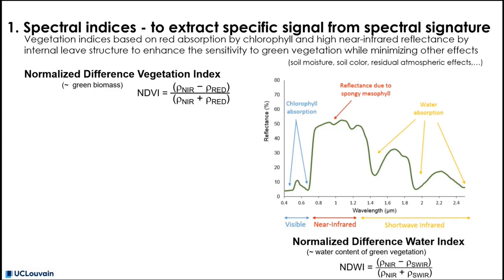On one hand, there is strong absorption providing very low reflectance in the visible band, more specifically in the blue and red band, due to chlorophyll absorption with the pigment capturing the necessary energy for photosynthesis. On the other hand, in the near-infrared domain, a very high reflectance value is observed due to the spongy mesophyll linked to the internal structure of the leaf.